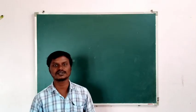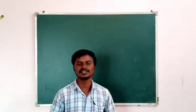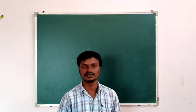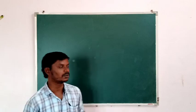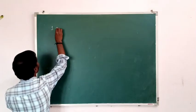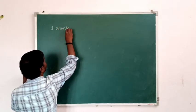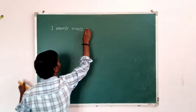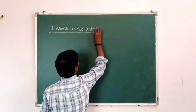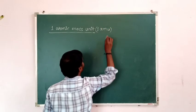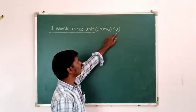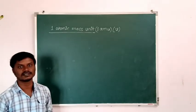Hello dear students. In today's class we are going to discuss what is one atomic mass unit and what is one electron volt. In nuclear physics and atomic physics, mass is measured in atomic mass unit and energy is measured in electron volt. One atomic mass unit is represented by 'amu' or simply 'u'.